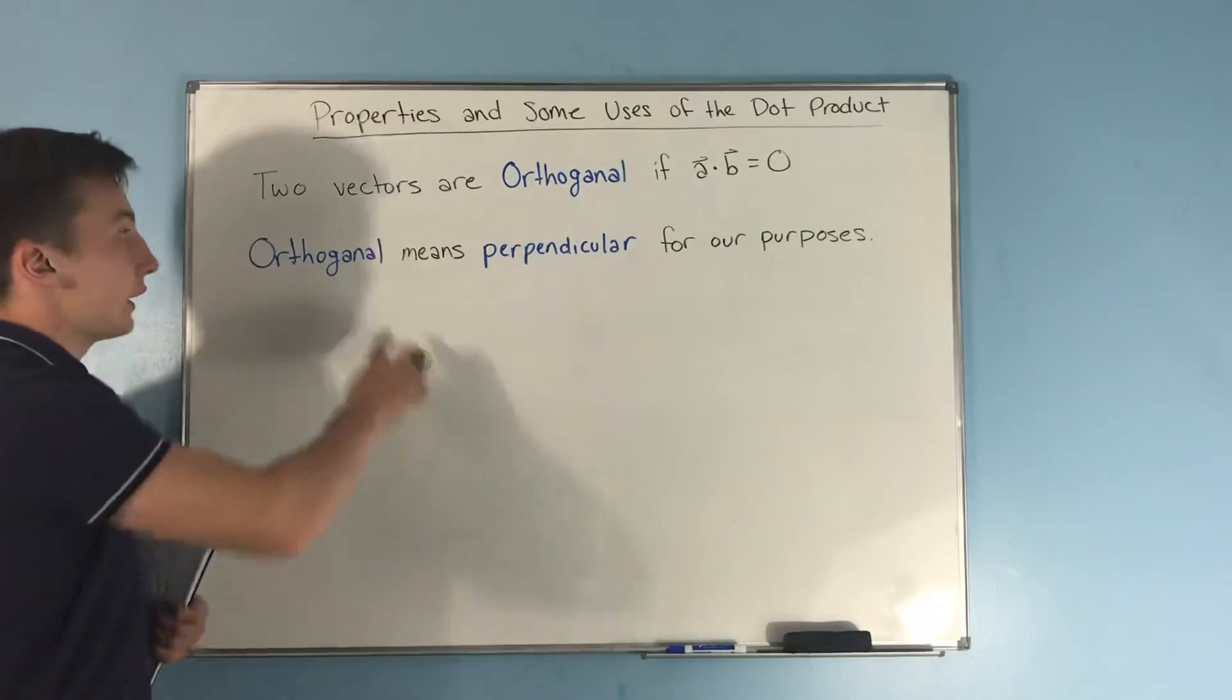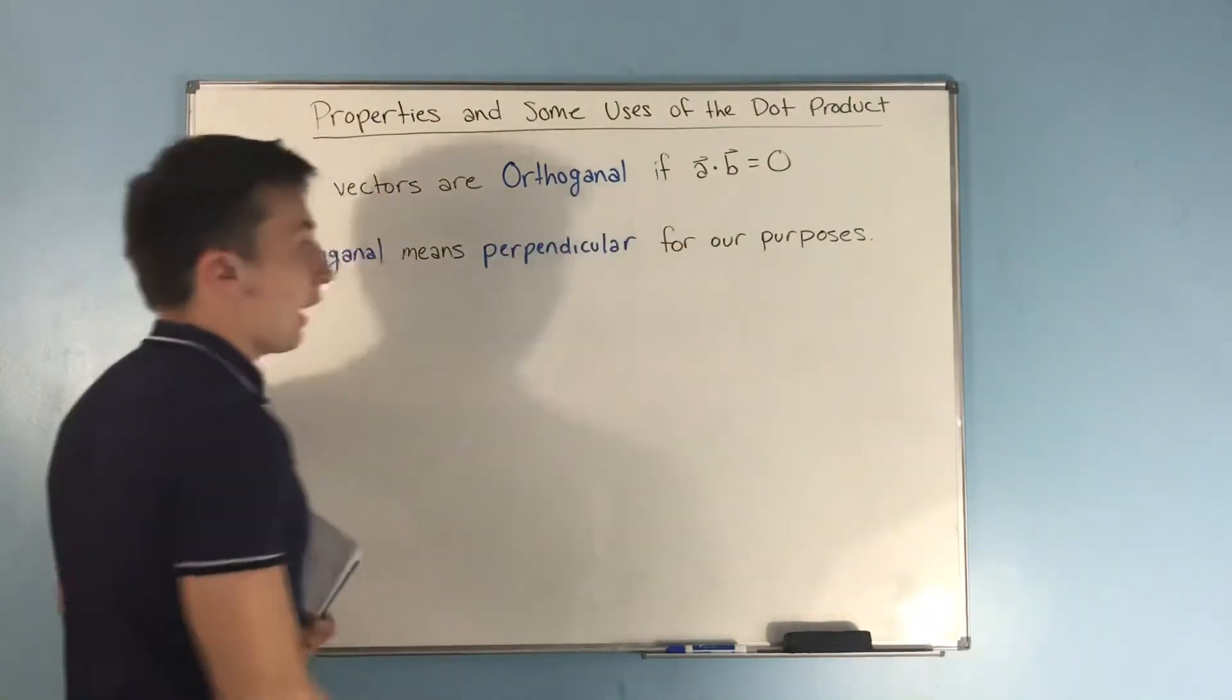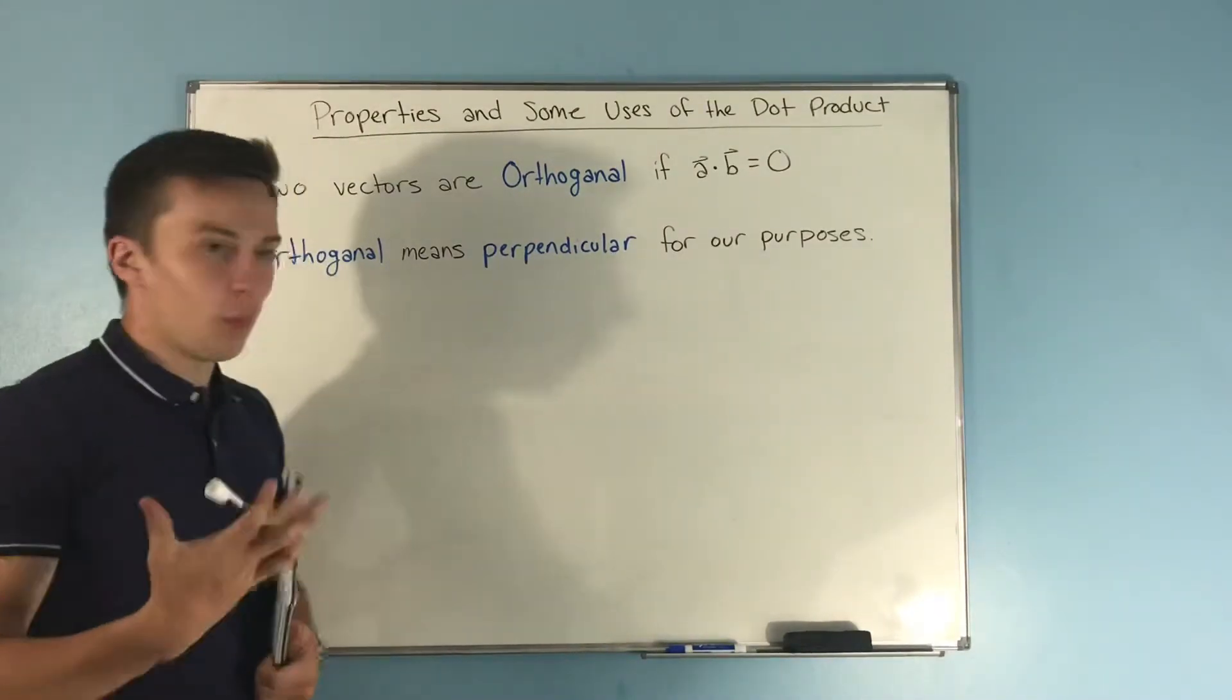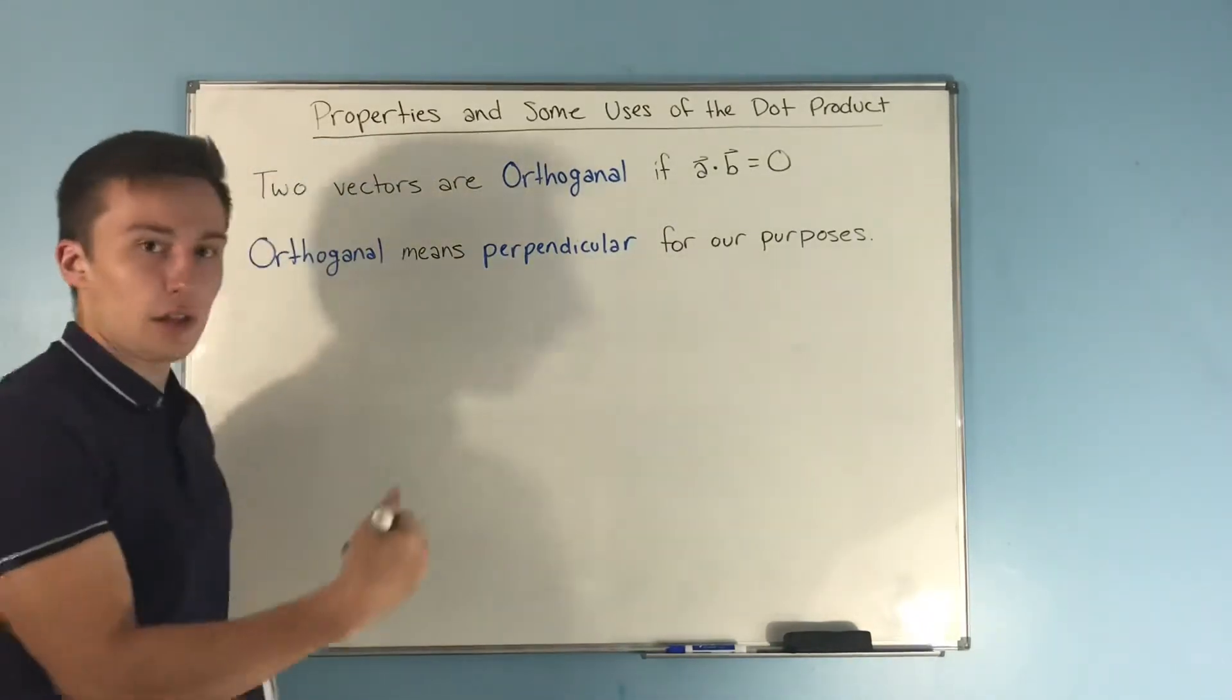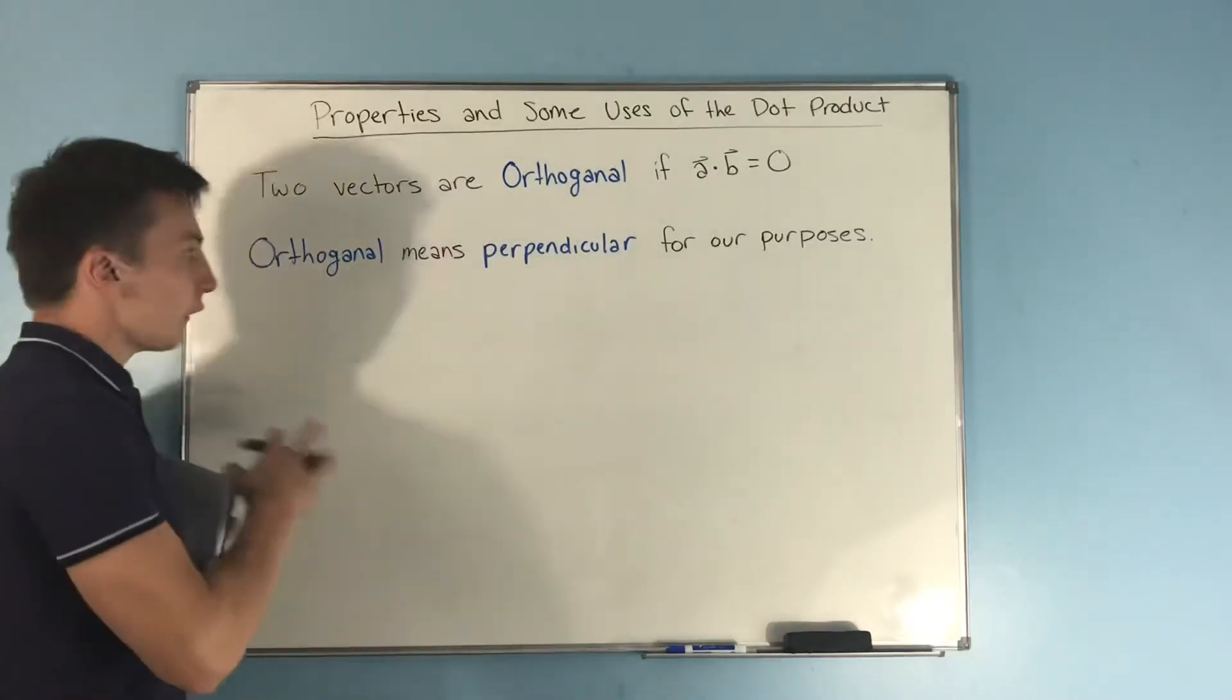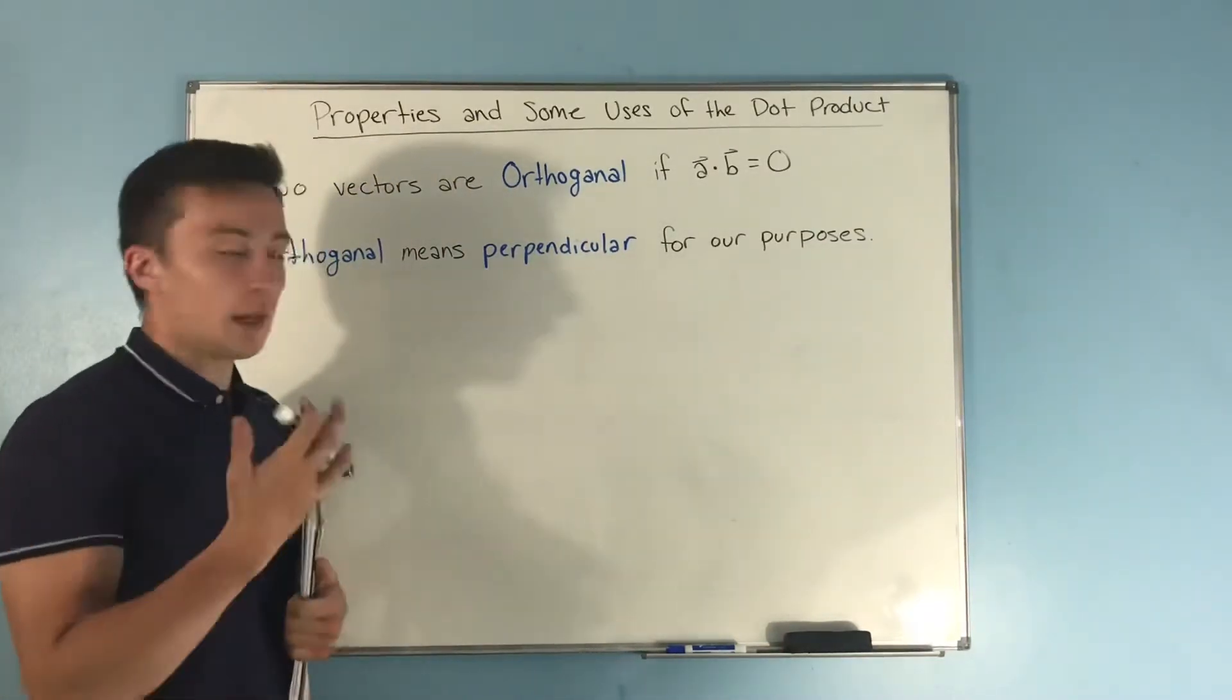Just one more thing that we're going to do, and then this video will be good. The last thing that we're going to touch on is that two vectors are orthogonal if you have that the dot product of them is 0. Now what does orthogonal mean? That's a new term for us. Well orthogonal means basically just, it's another word for perpendicular, just for our purposes. That's a word that you're going to see come up a lot in Calc 3, and that's what that means.